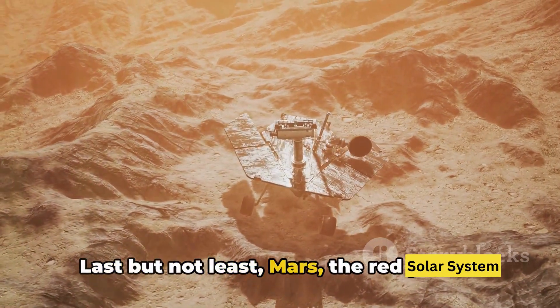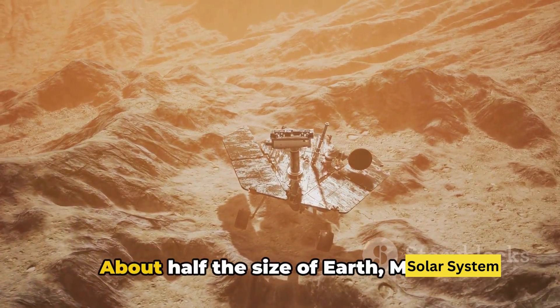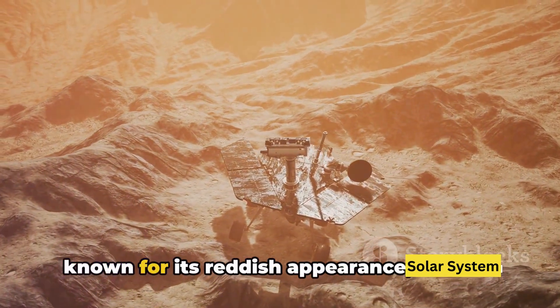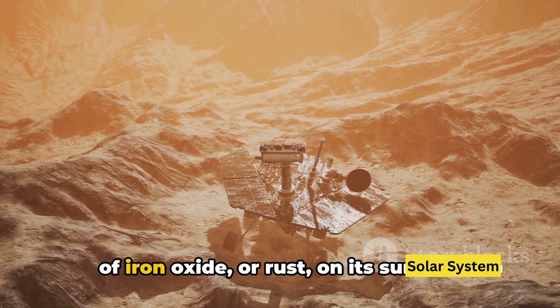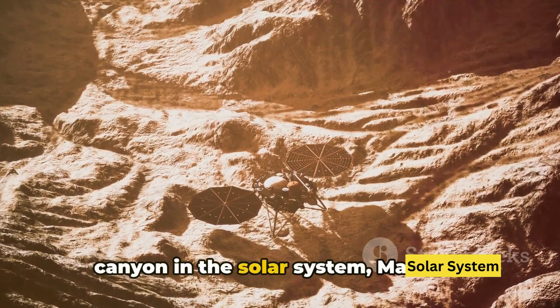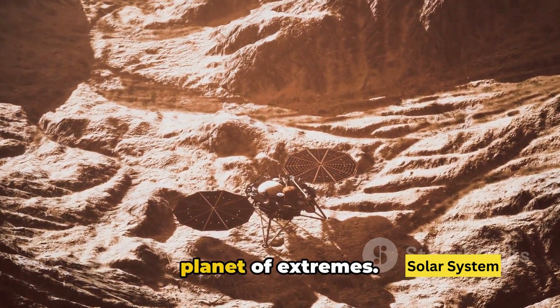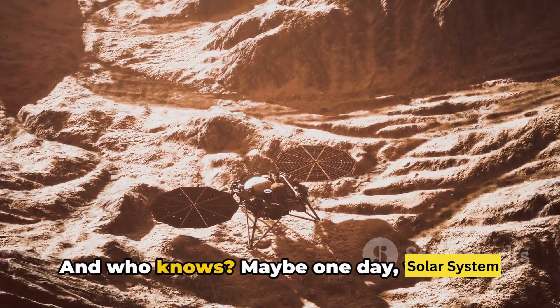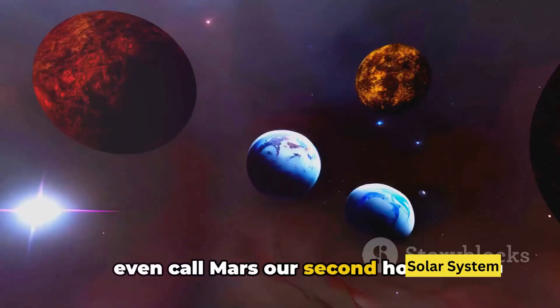Last but not least, Mars, the red planet. About half the size of Earth, Mars is known for its reddish appearance, a result of iron oxide or rust on its surface. With the largest volcano and the deepest canyon in the solar system, Mars is a planet of extremes. And who knows? Maybe one day we might even call Mars our second home.